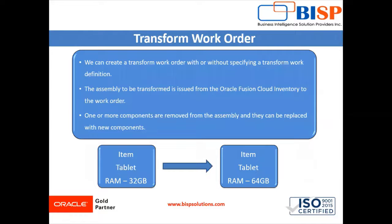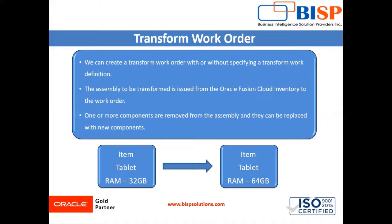In our Oracle Fusion Supply Chain Management Manufacturing application, a finished goods assembly can be transformed into a different assembly by removing or adding components. We can also create a transform work order with and without specifying the transform work definition. A transform work order is created in the manufacturing application where the assembly to be transformed is issued from Oracle Fusion Cloud Inventory to the work order, and the operations are executed on the shop floor.